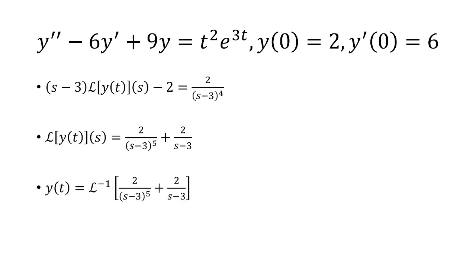Finally, I have to apply the inverse Laplace transform to the fraction. And so the inverse Laplace transform of 2 over s minus 3 to the fifth is just 1 over 12 times e to 3t times t to the fourth. And the inverse Laplace transform of 2 over s minus 3 is just 2e to 3t. And that is my answer.